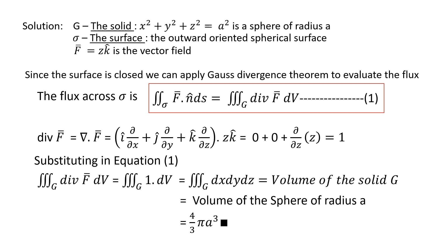Substituting divergence of F = 1 in the formula, it becomes triple integral over G of 1 dV, which is nothing but the volume of the solid G. Since the solid G is a sphere, the volume of the sphere of radius a is (4/3)πa³, and that gives you the flux across the surface.